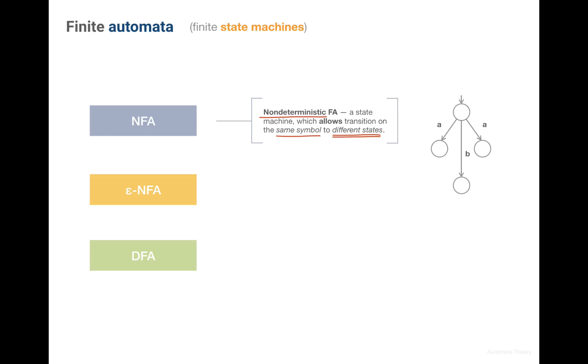It means such machine allows transitions from one state to multiple other states on the same symbol. In this example we see there are two transitions from the first state to these two states and both have the same character A on the edge.